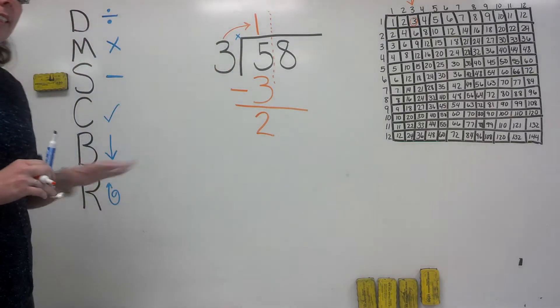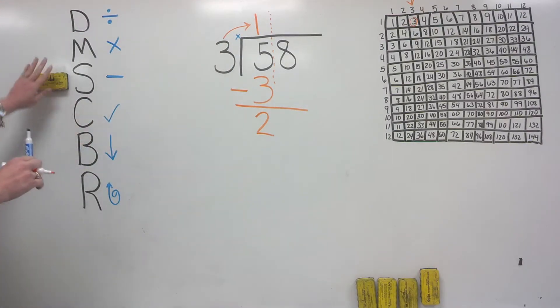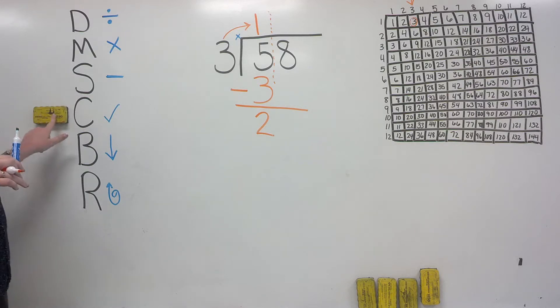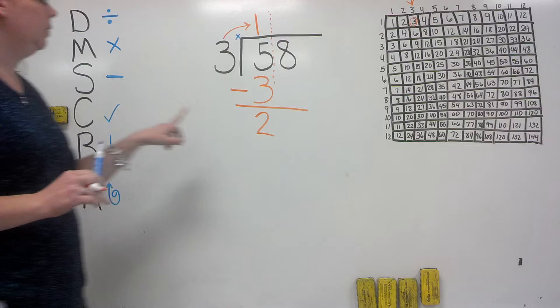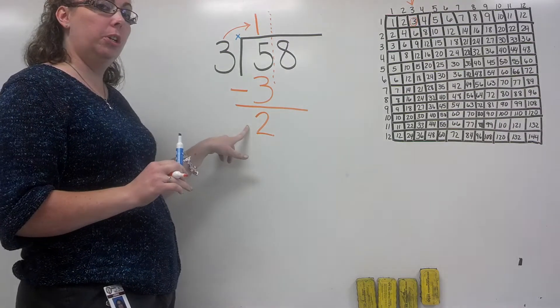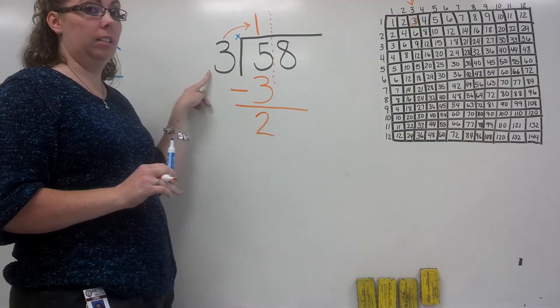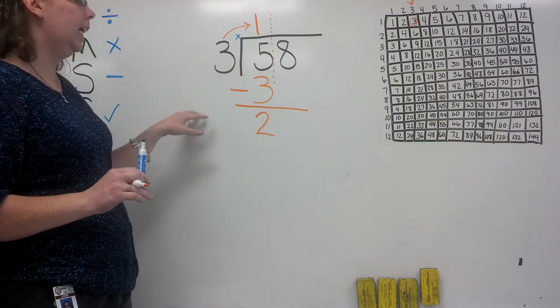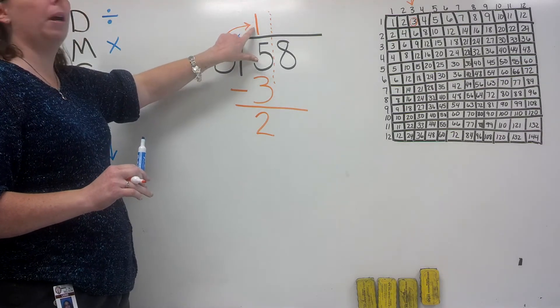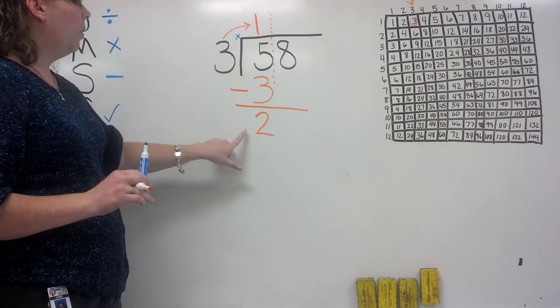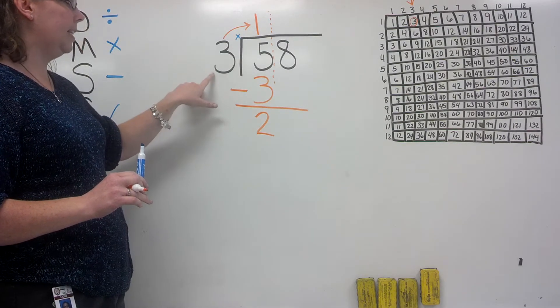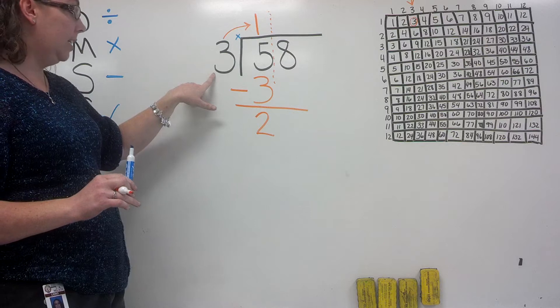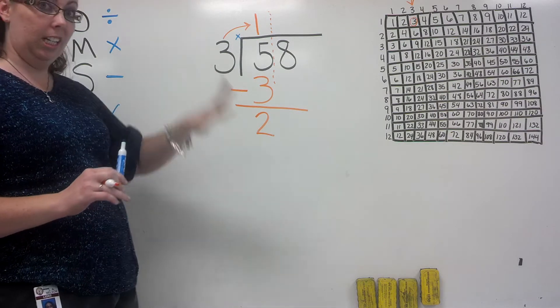Let's go to the next step: check. This is super important. You need to check that the 2 is less than 3. If 2 is not less than 3, or if 2 is more than 3, then you have a wrong number up here. Check to make sure: 2 is less than 3, and you can continue on.